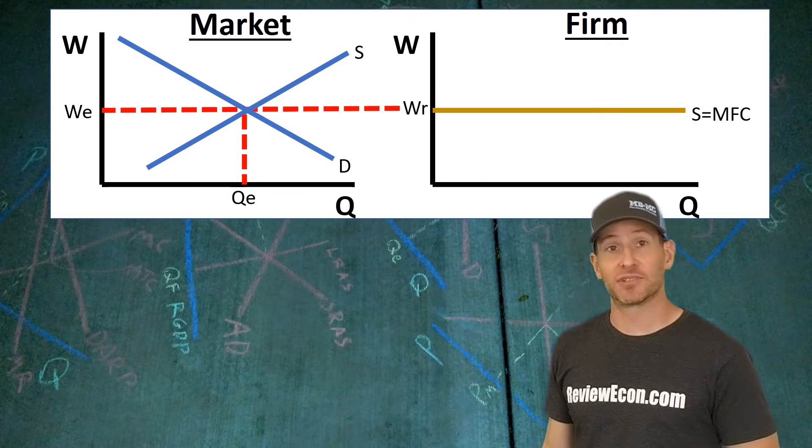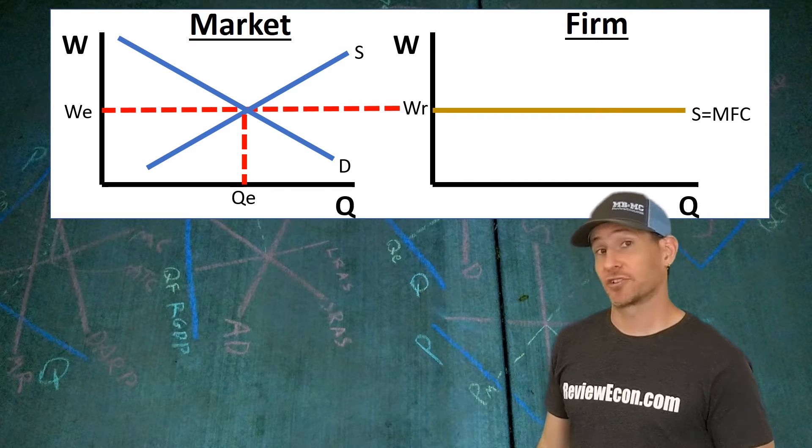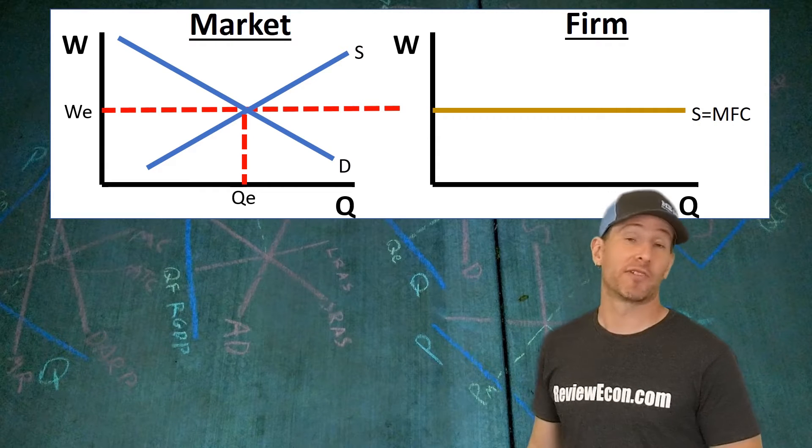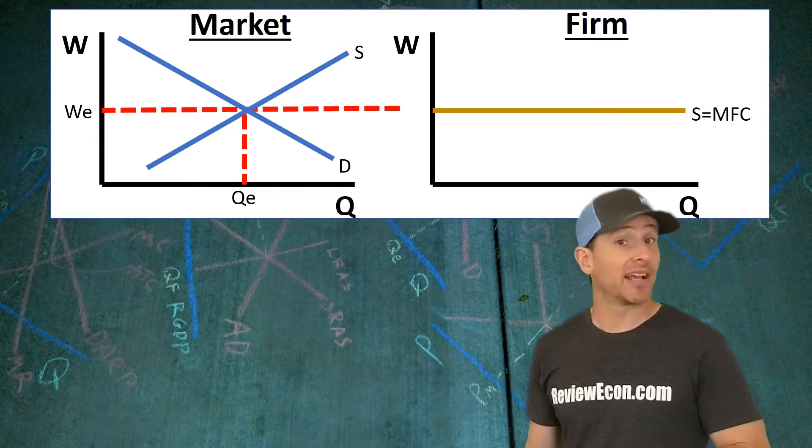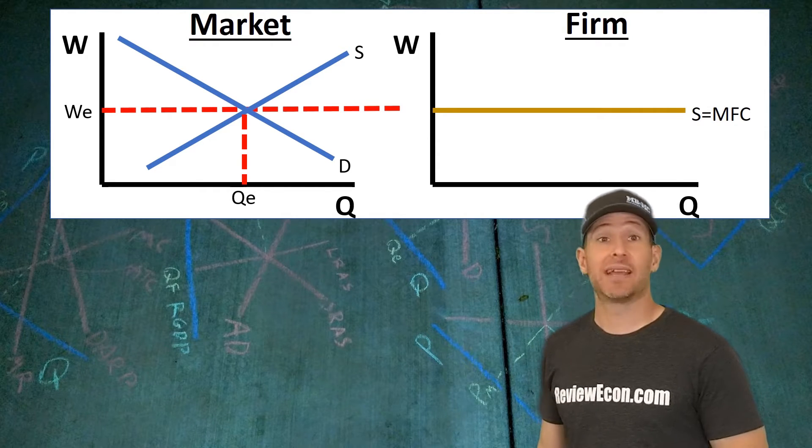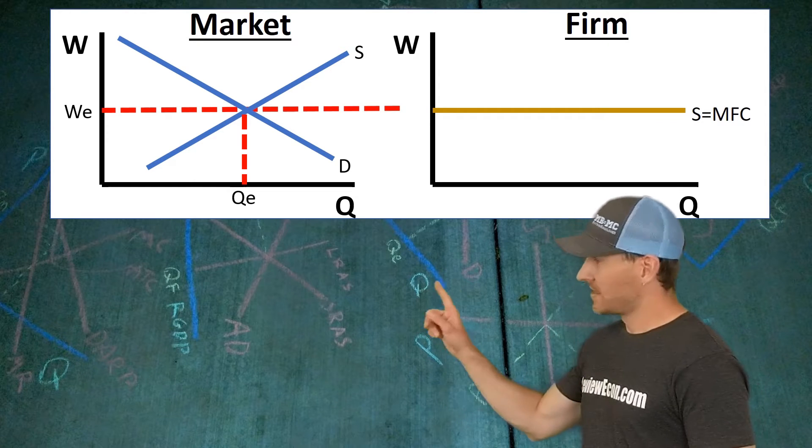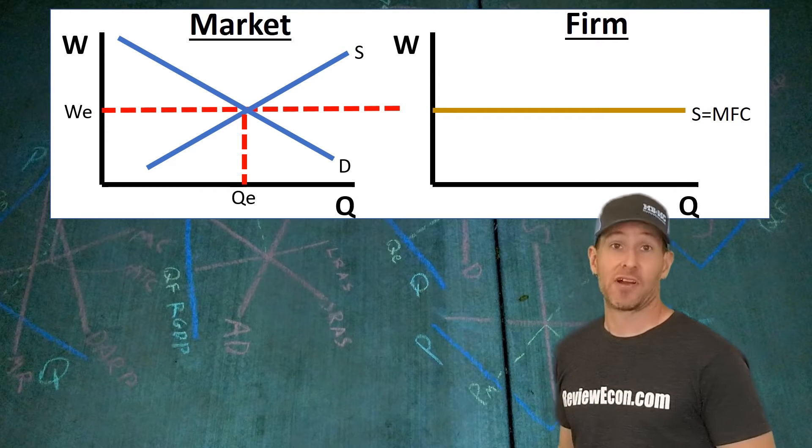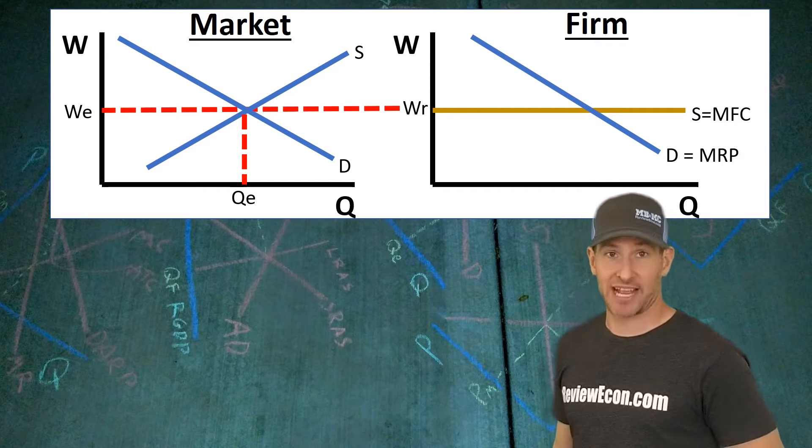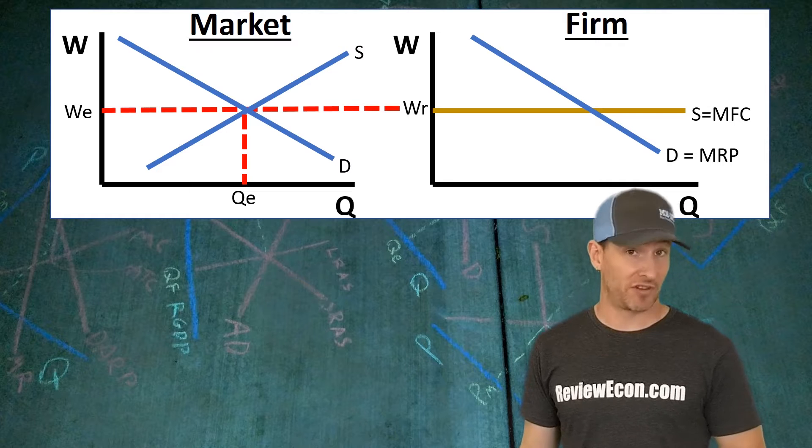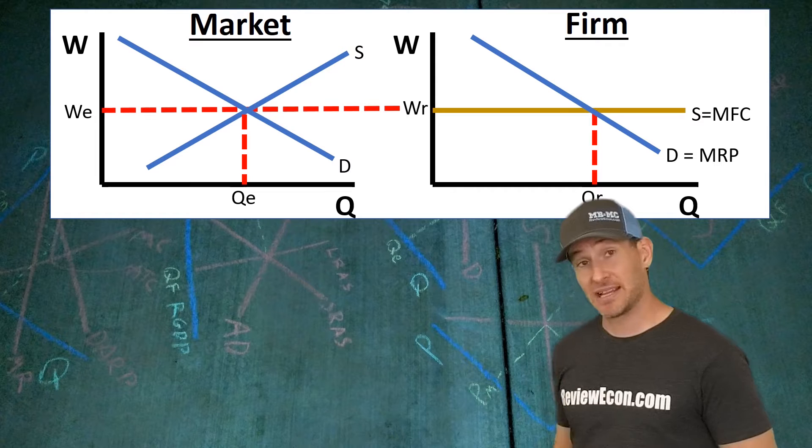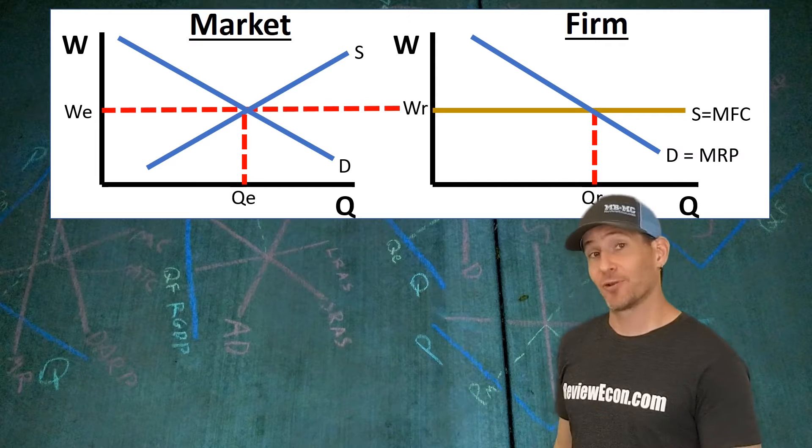That wage becomes the marginal factor cost for Ray Stable. Since Ray Stable is hiring in a perfectly competitive market, it can hire as many workers as it wants at that wage set by the market. Ray Stable is a wage taker. That becomes the supply curve for the firm. You will also have a downward-sloping demand curve for Ray Stable. It is equal to the marginal revenue product of his workers. Where those two curves intersect, that will be the quantity of workers that Ray Stable hires.